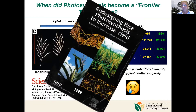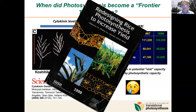So what came out of these observations? John Sheehy became a pioneer of improving photosynthesis. In 1999 he ran a workshop at Los Baños in the Philippines, where he invited a whole range of experts in photosynthesis to get together and talk about redesigning rice photosynthesis — what could we do to improve rice yields? Looking back at the monograph, many of the traits and approaches we're using now were present in those early presentations almost 20 years ago.